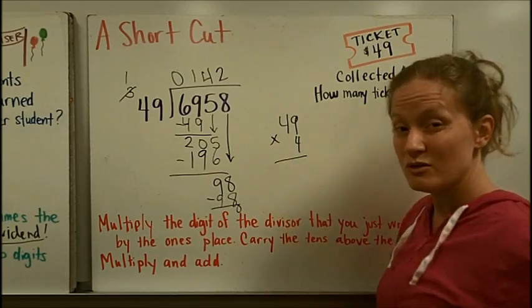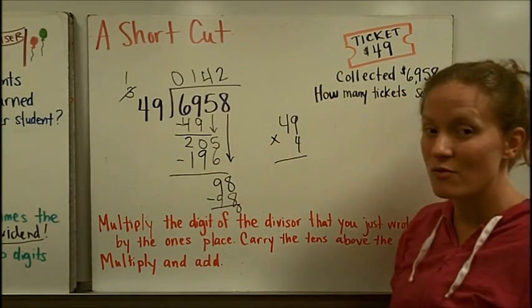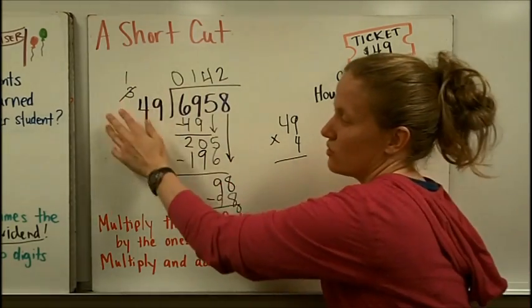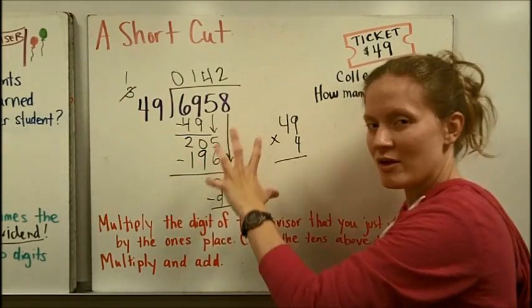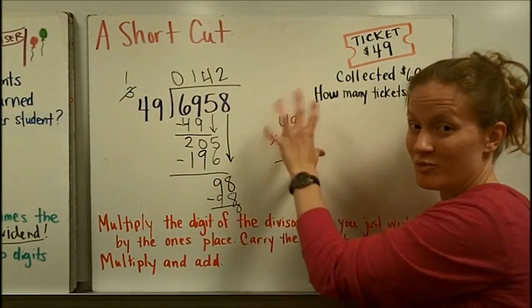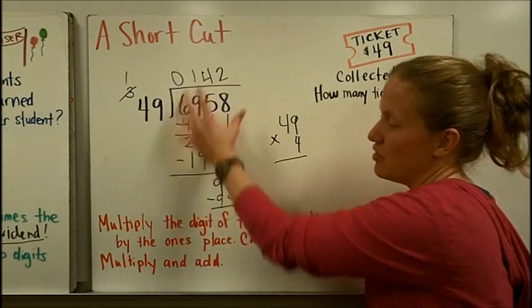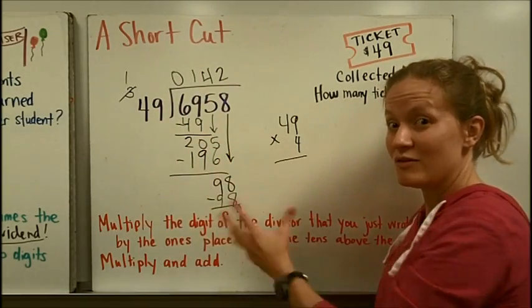So in this case, 142 tickets were sold at the price of $49. Again, if this shortcut, keeping track of how you're multiplying over here, doesn't help you, then stick with multiplying to this side and adding, putting what you figure out over here in the division problem.